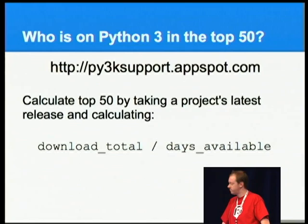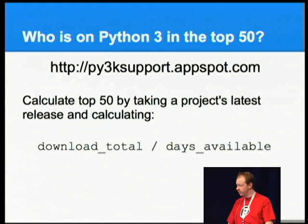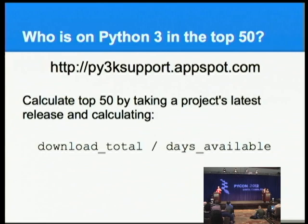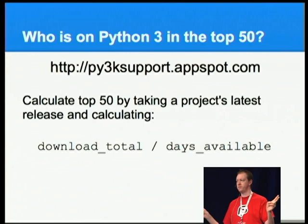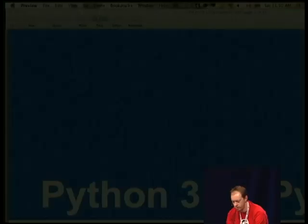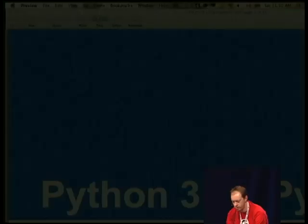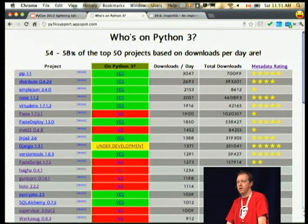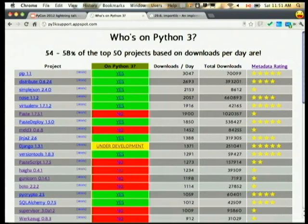Back in February of 2011, the PSF sponsored me to create a website called py3ksupport.appspot.com, which I completely redesigned in the last few months. What it currently does is try to figure out roughly what the top 50 projects are. It's based on taking the latest version of a project, calculating download total divided by the days available per file uploaded, and using that as a popularity index. Without further ado, let's have a quick live look. Roughly 54 to 58% of the top 50 projects have already been ported to Python 3. The 54 is definite and the 58 is maybe. I personally hand-curate the top 50 projects to make sure that whether a project ambiguously supports Python 2 or Python 3 is properly assessed — I do the Google search, look through the mailing list, and figure out if they've actually done the work.